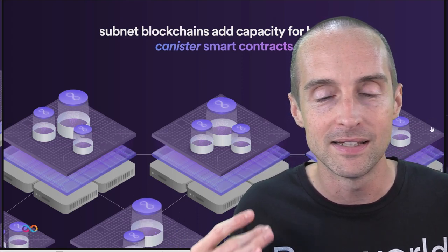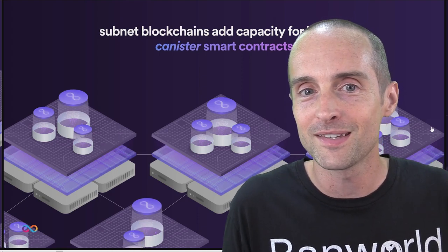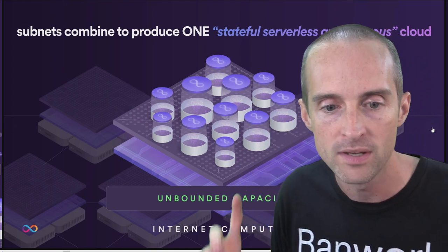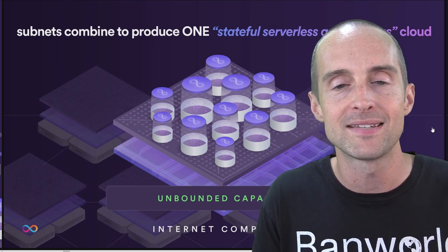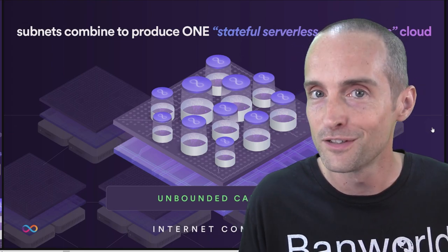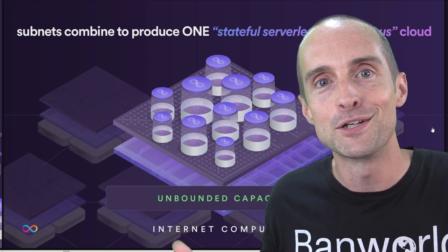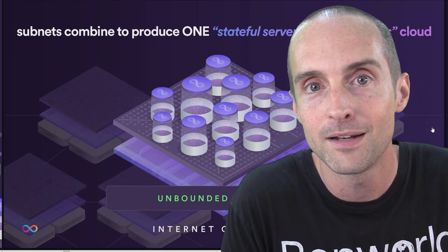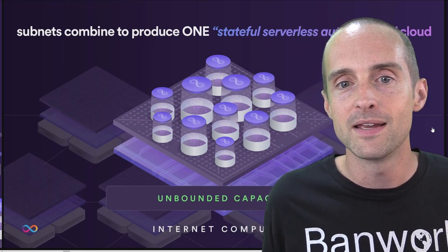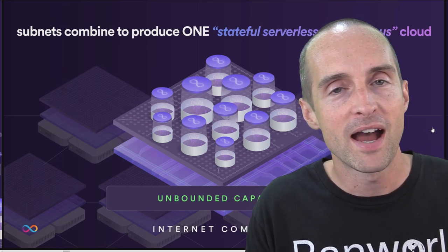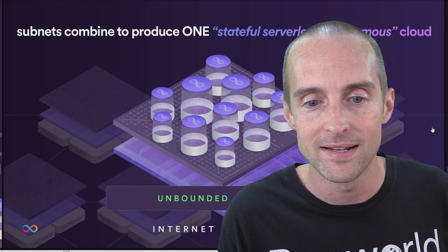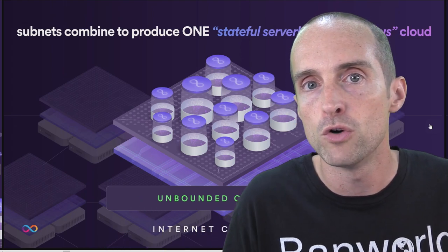When you put this all together, the subnets combine to produce one stateful, serverless, autonomous cloud that anyone can access and expand infinitely. We've seen the scaling problems with Ethereum — and layer-two solutions are clearly not sustainable. Try using one layer-two and then another; they're not compatible and the user experience is terrible. ICP is the opposite of that. All you need to do is keep adding more nodes and expanding more subnets, and this thing could run the entire internet.